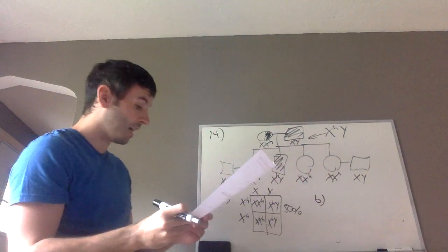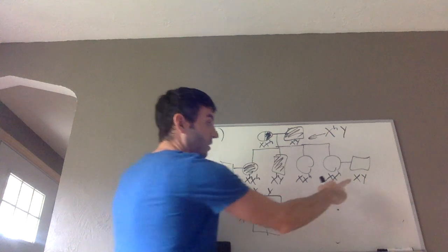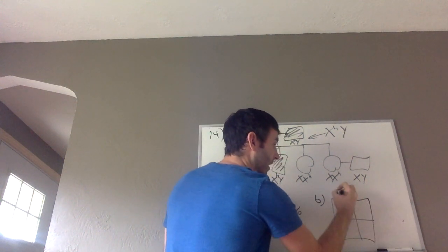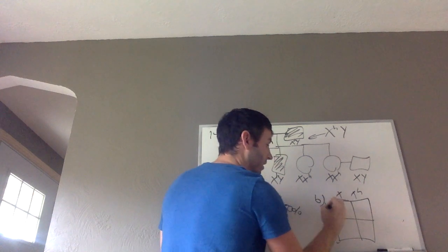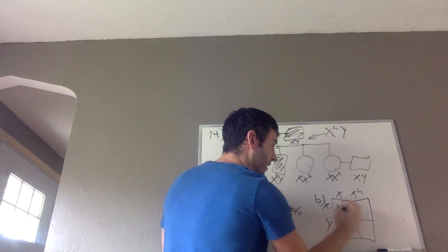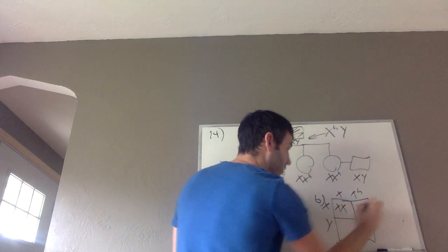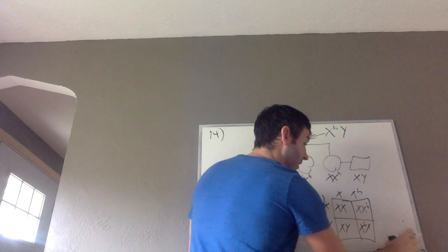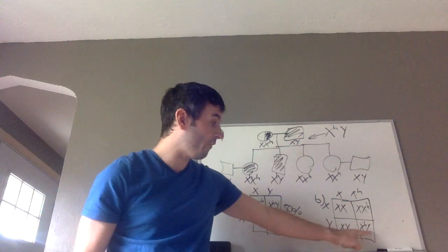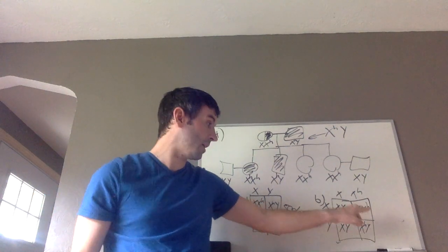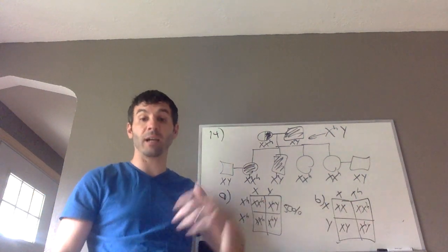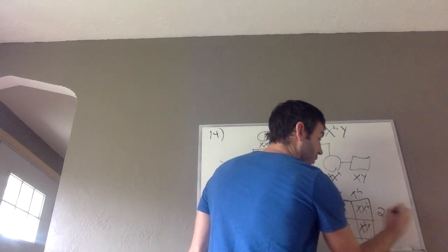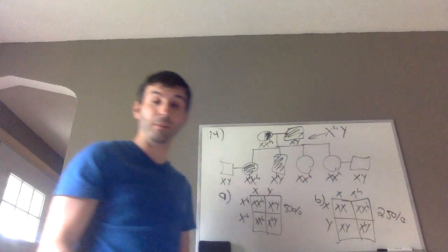The last problem: couple 2-5 and 2-6. Let's do one more Punnett square. Put X-X-H and X-Y, fill it in: X-X, X-X-H, X-Y, X-H-Y. This time, 50% of the males will have hemophilia, none of the females will. So that comes out to a total of 25% of the children — 25% will have hemophilia.